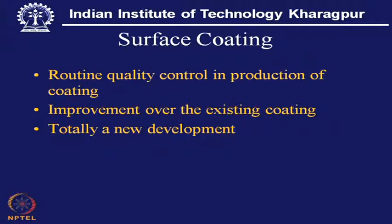When it is a surface coating, we can have three types of activities. One is that a coating is deposited or produced in mass production in a routine manner. In this routine activity, to know whether the process technology is consistent, reproducible, and can be handled without difficulty — routine time-to-time stock taking is important. That means routine checking on the quality of the coating, which we call routine quality control, normally done in the manufacturing unit.